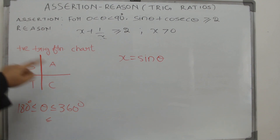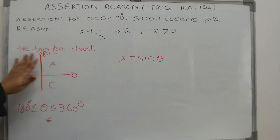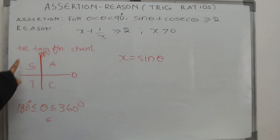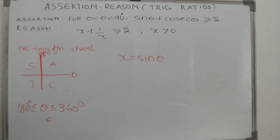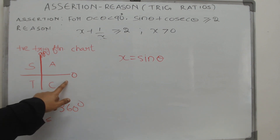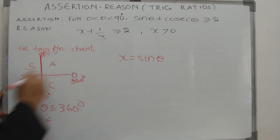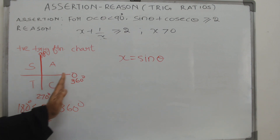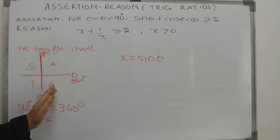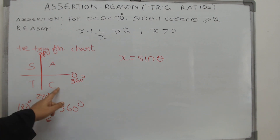This chart shows where all the trigonometric functions are positive. In the first quadrant, for all angles from 0 to 90 degrees, all trigonometric functions are positive. From 90 to 180, only sine is positive — and since sine is positive, its reciprocal cosecant is also positive. In the last quadrant, from 270 to 360 degrees, only cosine theta and its reciprocal secant theta are positive.